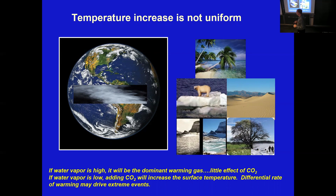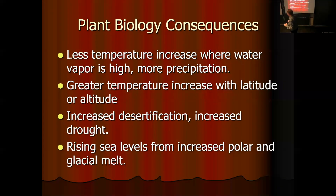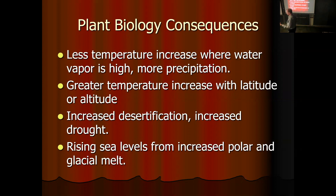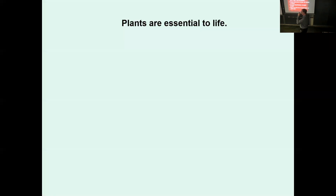Now there's going to be some plant biology consequences of this. Less temperature increase where water vapor is high, but more precipitation. Greater temperature increase with latitude or altitude, increase in desertification, increase in droughts. Rising sea levels from increased polar and glacial melt. There's another reason why you should give a flying pig.